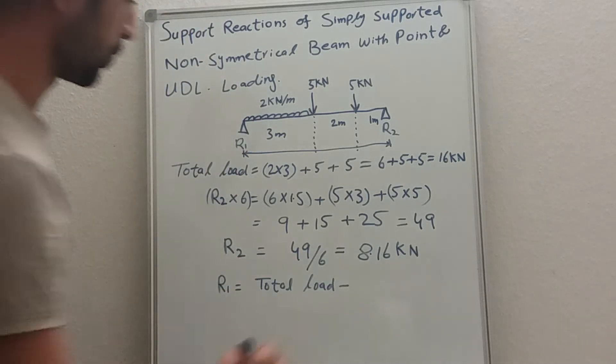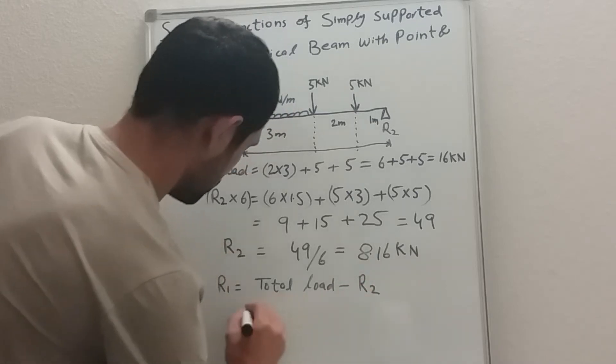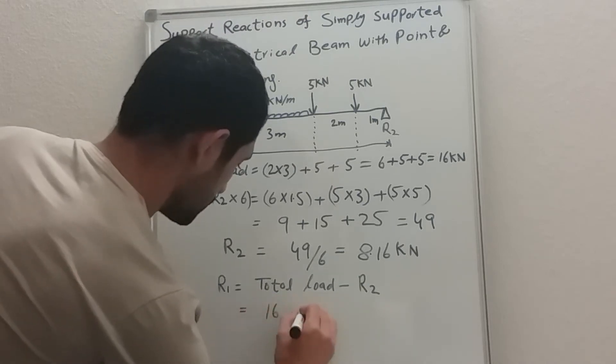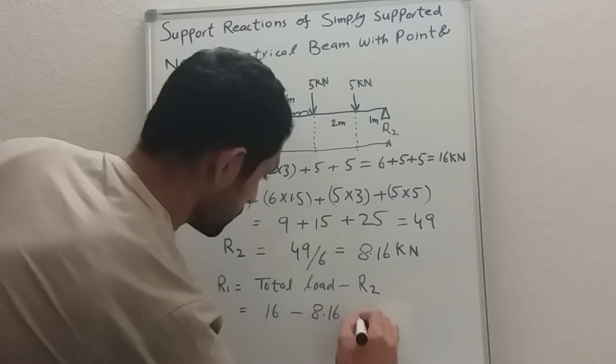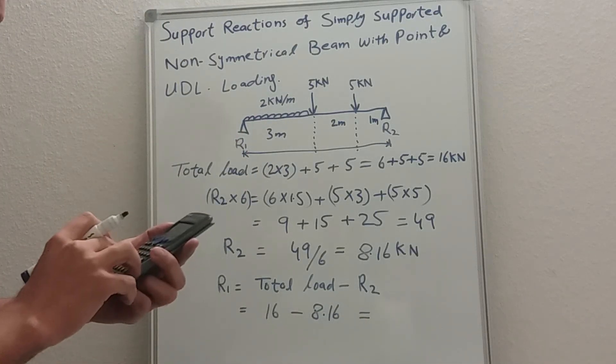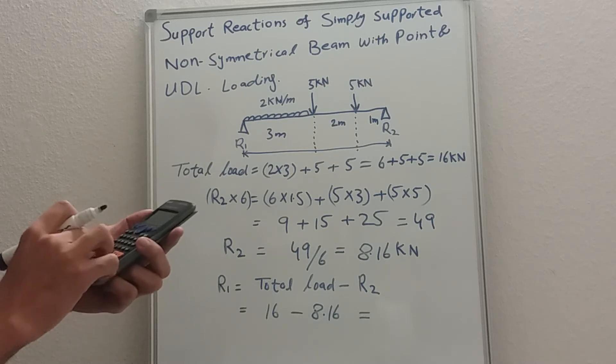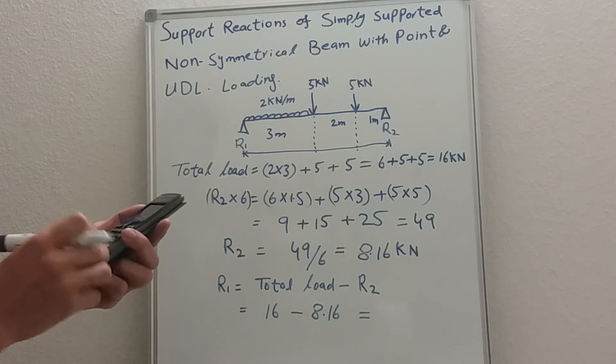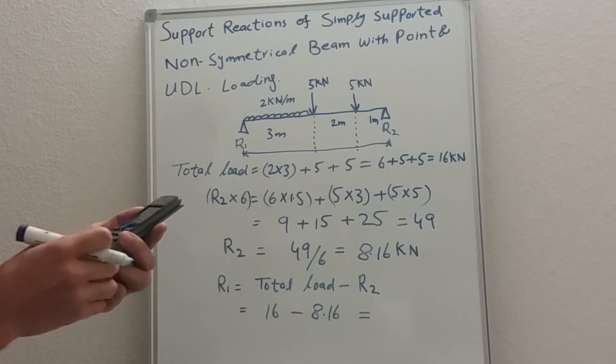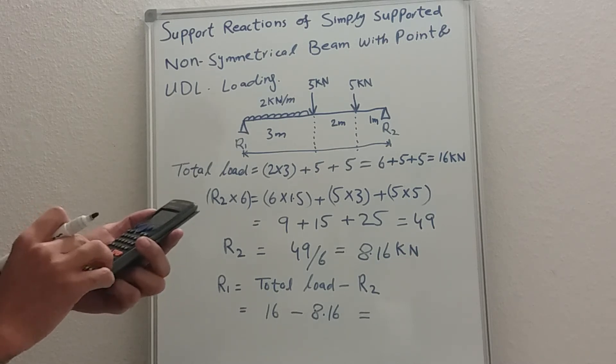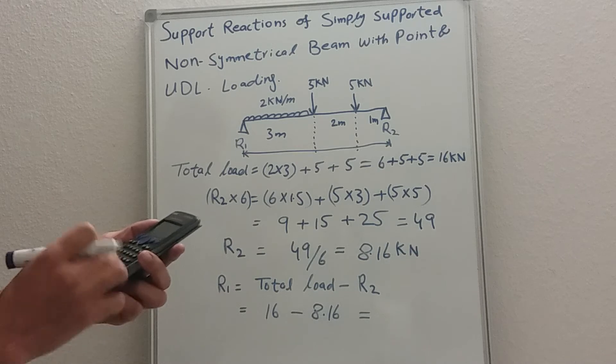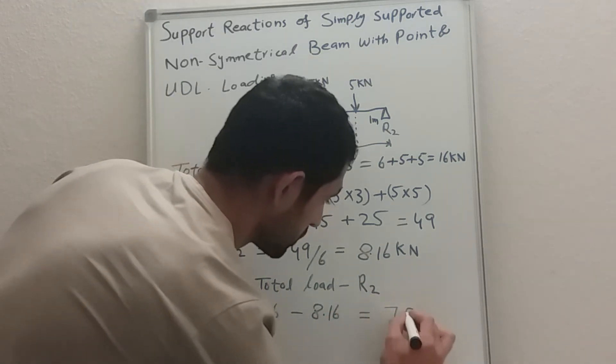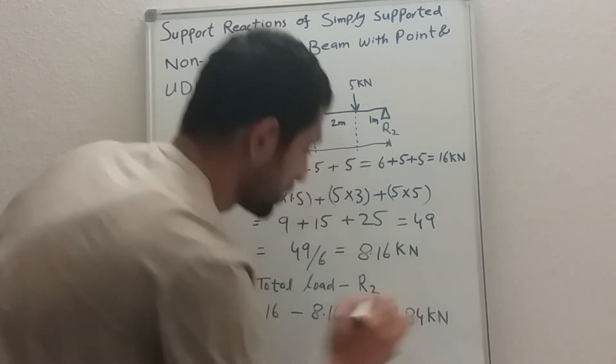Now R1: total load minus R2. So total load is sixteen, R2 is 8.16. We have 7.84 kilonewtons.